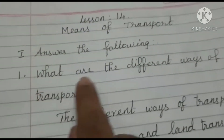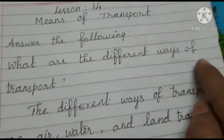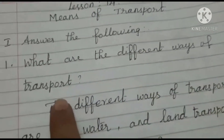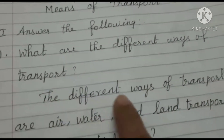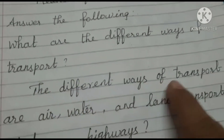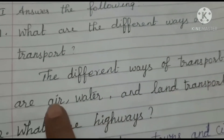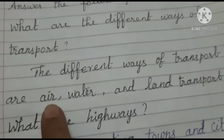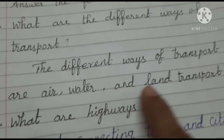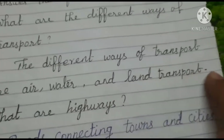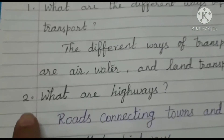Number 1: What are the different ways of transport? The different ways of transport are air, water, and land transport.